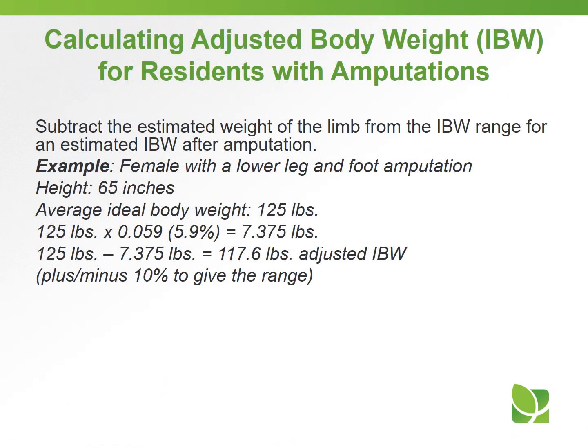The following is an example of how to calculate adjusted body weight for residents with amputations. Subtract the estimated weight of the limb from the IBW range for an estimated IBW after amputation. This example is a female with a lower leg and foot amputation, 65 inches in height, with an average ideal body weight of 125 pounds — you can see the calculations listed to get the adjusted IBW.